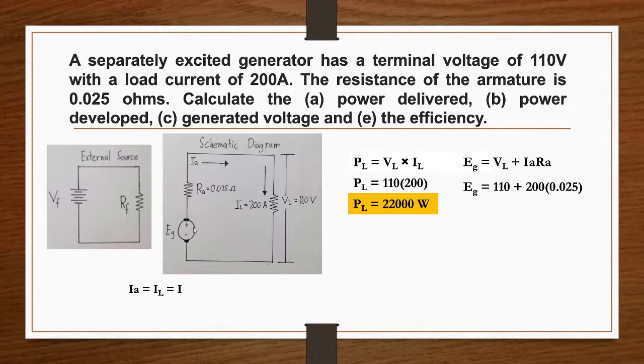Since our circuit is a series connection, we can say that load current is equal to armature current.